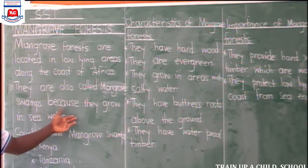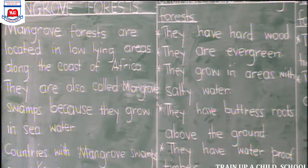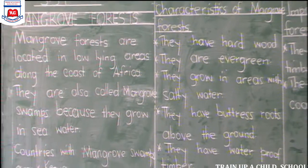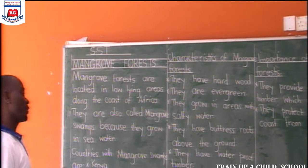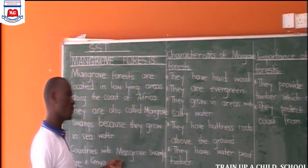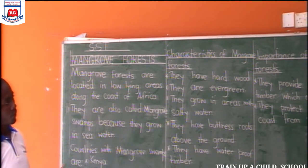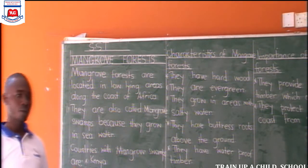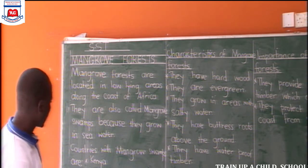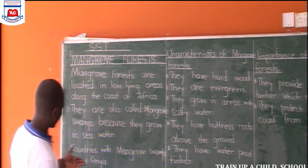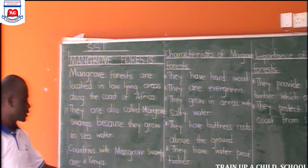That's why they are called mangrove swamps. We have many countries in Africa — when you check from your atlases — which have mangrove forests. Those countries lie along the coast of West Africa and also along the coast of East Africa. For example, in East Africa, countries which share the coast, we have Kenya and Tanzania.